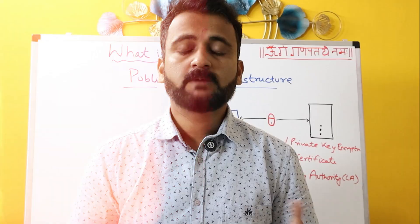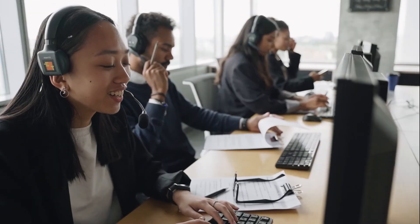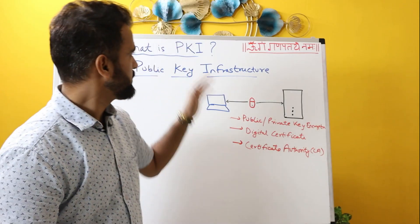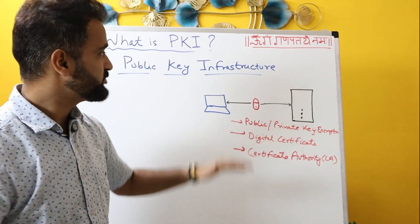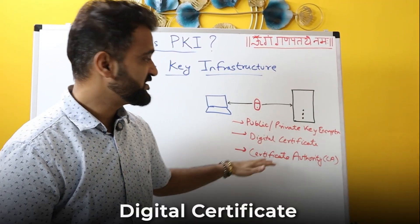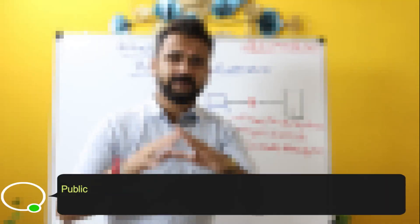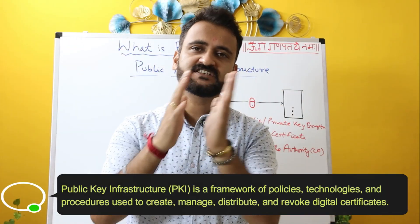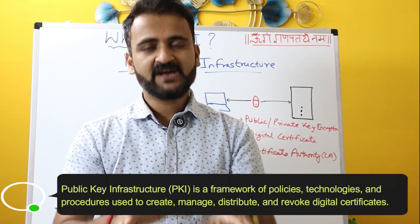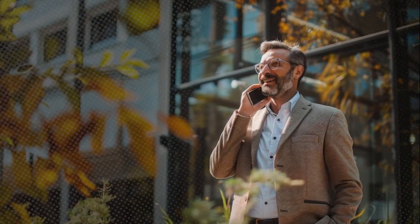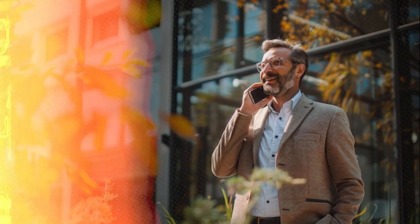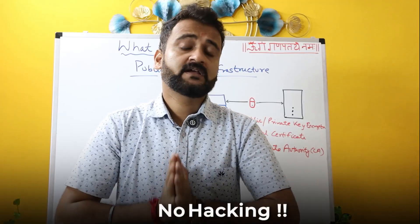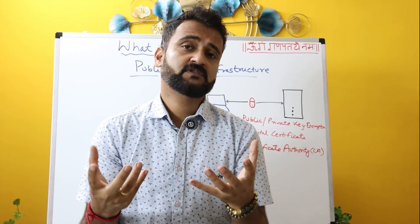What is PKI? Public Key Infrastructure. Whatever communication we do over the internet uses public key infrastructure. It includes public and private key encryption, digital certificate, and certificate authority. PKI is that ecosystem — a set of technologies, tools, and processes which make sure that anything happening over the internet or any communication between two devices is secure, cannot be hacked, and is threat-proof.